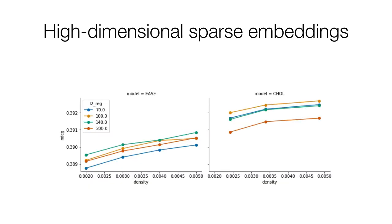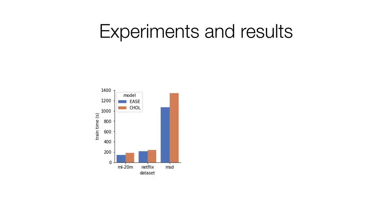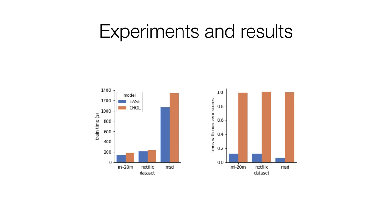If we zoom in on the difference between EASE here on the left and our proposed model on the right, we see that the Cholesky model comes out slightly ahead for a range of different sparsities and regularization levels. We also compare the two models in terms of training time, and what we see is that the overhead due to the Cholesky decomposition is relatively small.